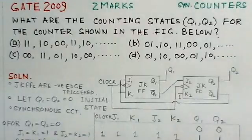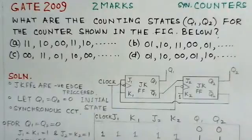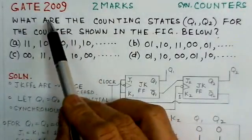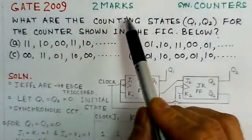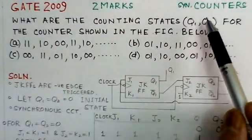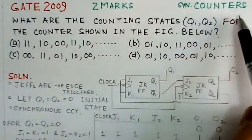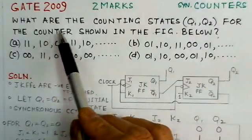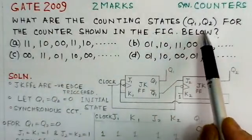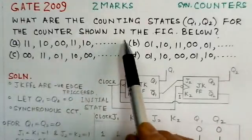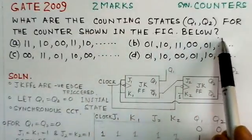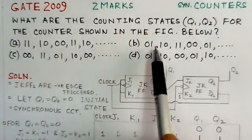This problem is the second problem of the set and it is based on synchronous counters. We will read out the problem here — GATE 2009, two marks. The question asks: what are the counting states Q1, Q2 for the counters shown in the figure below? There are four options.